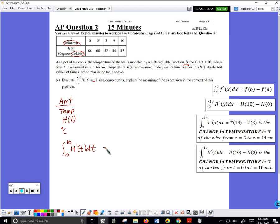This is equal to H of 10 subtract H of 0. H of 10 is 43. H of 0 is 66. I can stop there. I'd want to have units, but I have evaluated that.